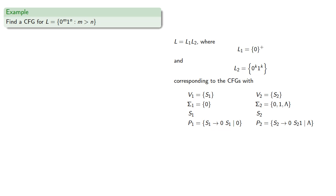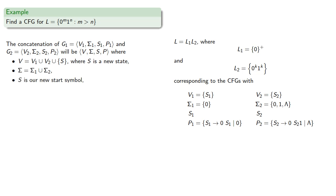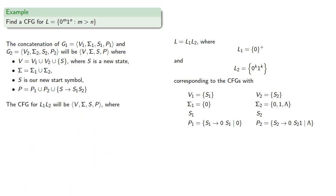Now we know the context-free grammar for the two individual languages, so we can write the context-free grammar for their concatenation. Our set of variables is the union of the two sets of variables with a new start state. Our terminal symbols are the union of the two sets of terminal symbols. Our production rules are the union of the production rules together with a new production rule: start symbol produces S1 S2.